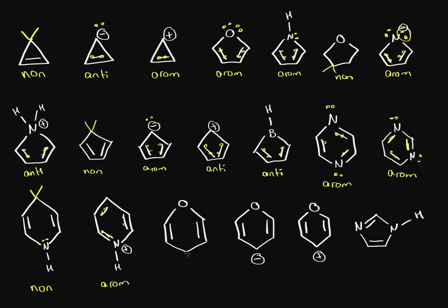On this one we can see that we have an sp3 carbon right there, so this is non-aromatic. On this one the oxygen can either be sp2 or sp3. When it's sp2 we have 1, 2, 3, 4, 5, 6, 7, 8 electrons total, so that will be anti-aromatic.